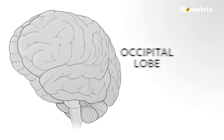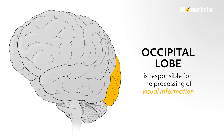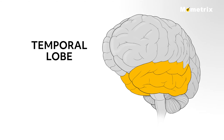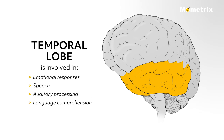The occipital lobe is located at the back of the skull, inferior to the parietal lobe, and is responsible for the processing of visual information. The temporal lobe, found directly inferior to the parietal lobe and over the ear area, is involved in emotional responses, speech, auditory processing, and language comprehension.